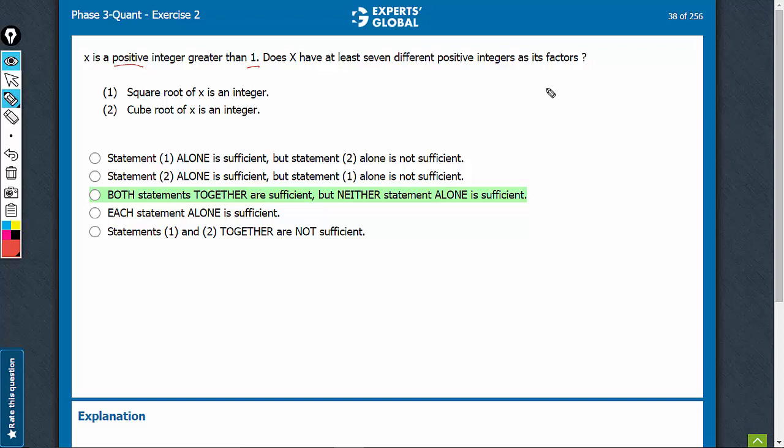So, if x is something like 4, that is 2 squared, the answer would be no. If the value of x is, let's say, 2 raised to power 20, its square root will, of course, be an integer, and the answer would be yes. Yes and no, both are possible. So, statement 1 is not sufficient.